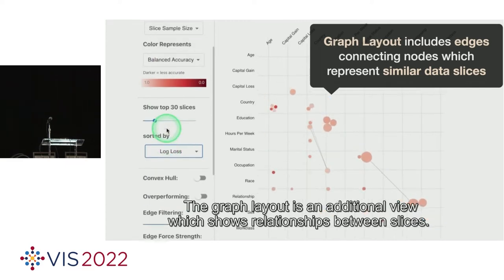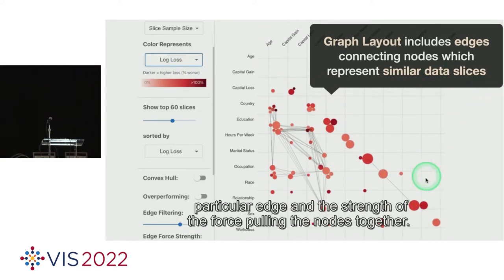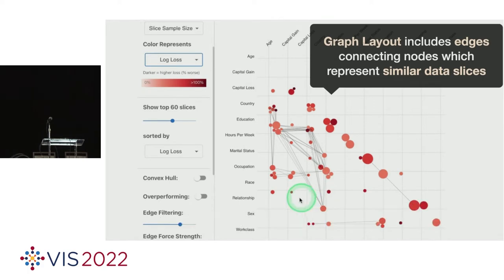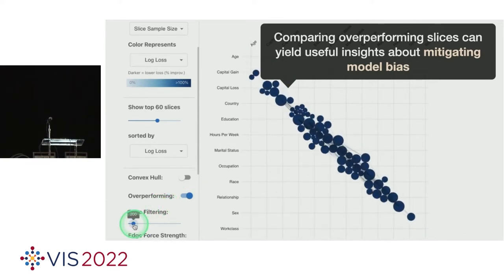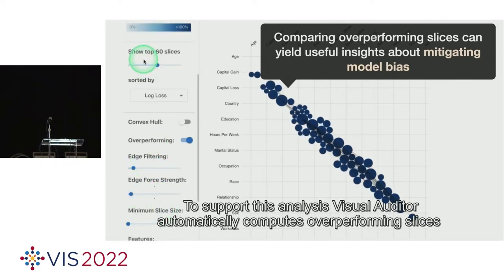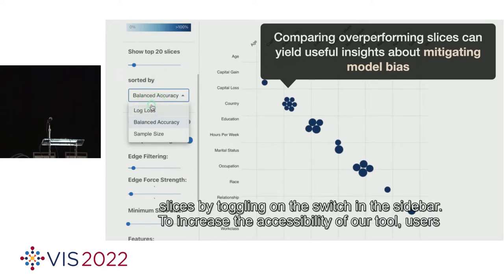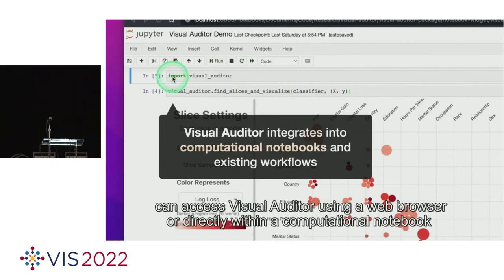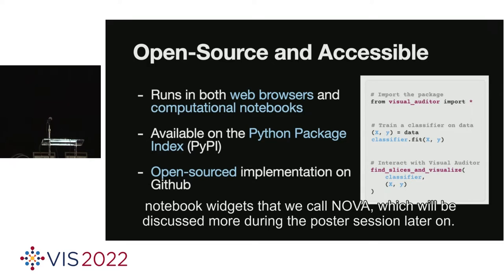The graph layout is an additional view which shows relationships between slices. The number of overlapping samples between two slices determines the thickness of that particular edge and the strength of the force pulling the nodes together. Viewing which intersections of features yield the highest accuracies provides users with additional insight. Visual Auditor automatically computes overperforming slices as part of the slice finding algorithm. Users can switch to viewing overperforming slices by toggling on the switch in the sidebar. Users can access Visual Auditor using a web browser or directly within a computational notebook via the Python package index using a method called Nova.